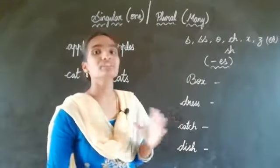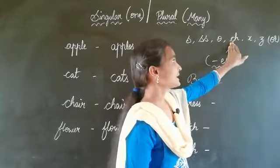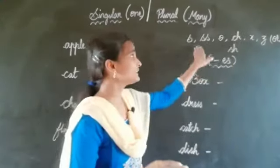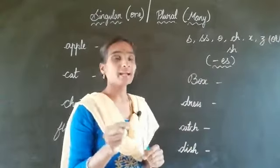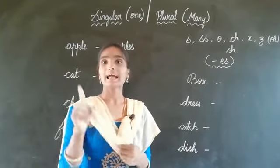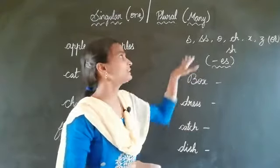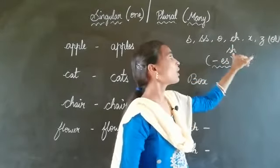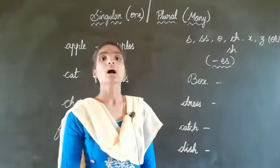There are a few words which end with S, SS, O, CH, X, Z, or SH. Those words end with these letters. We should add ES to the words which end with S, SS, O, CH, X, Z, or SH. For those words, we are going to add ES to make it as a plural form.